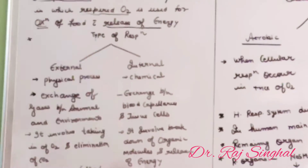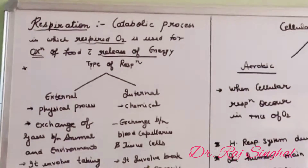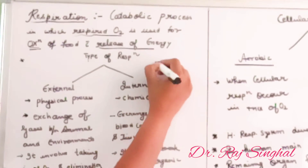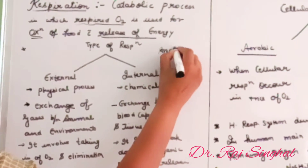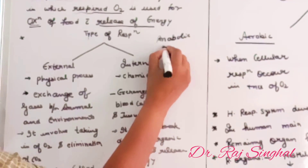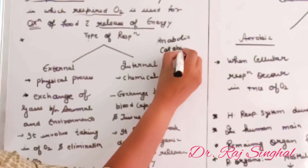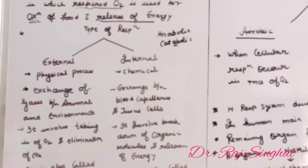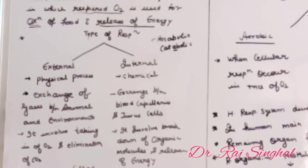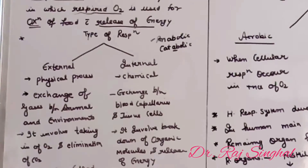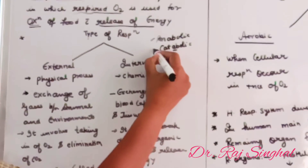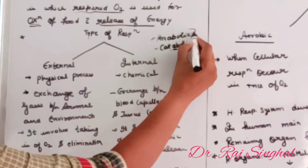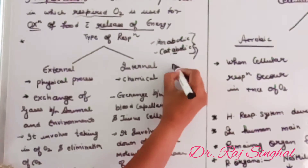Catabolic process means there are two types of reactions occurring in the body. The first is anabolic and the second is catabolic. All reactions dealing with the synthesis of some material are known as anabolic reactions, and those reactions which involve the breakdown of any material are known as catabolic reactions. Together they constitute metabolic reactions.